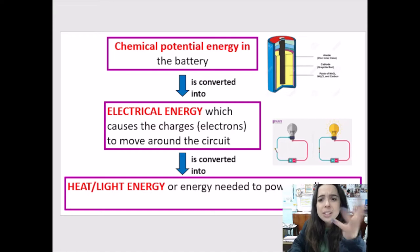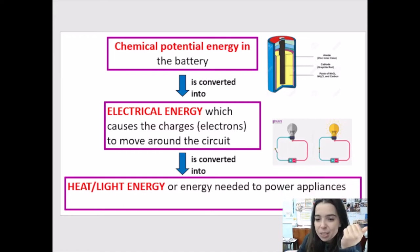Then the reason why we need this electrical energy is because those little charges, they move around the circuit to the components in the circuit, like the light bulb, like you can see up here, or maybe an appliance or maybe a resistor or something like that. And that electrical energy is converted into heat energy or light energy or energy needed to power the appliances.